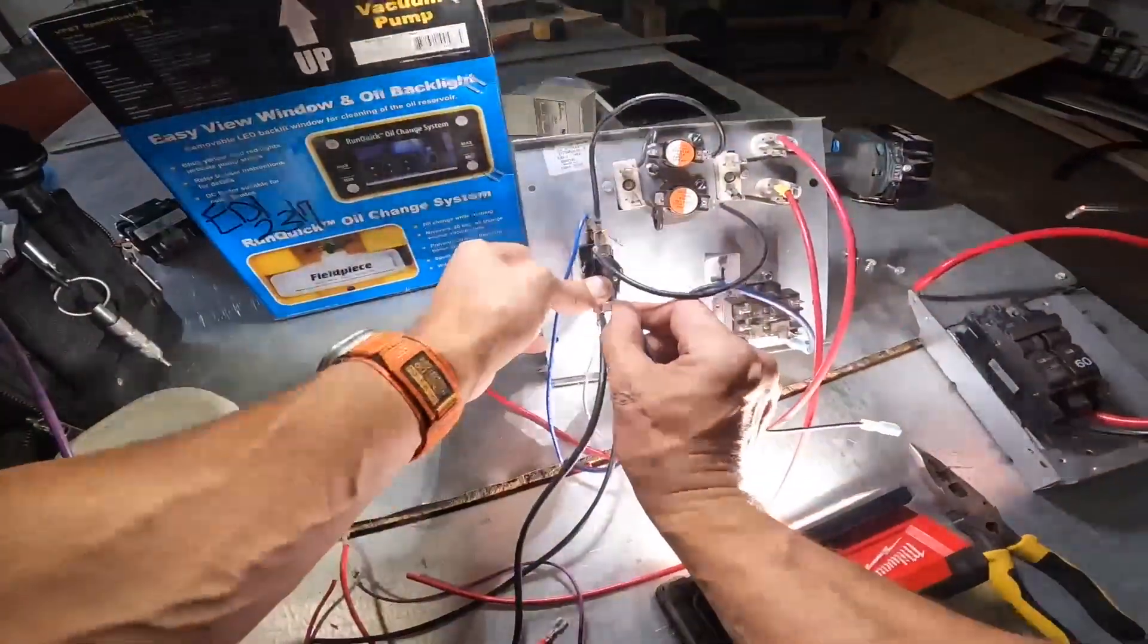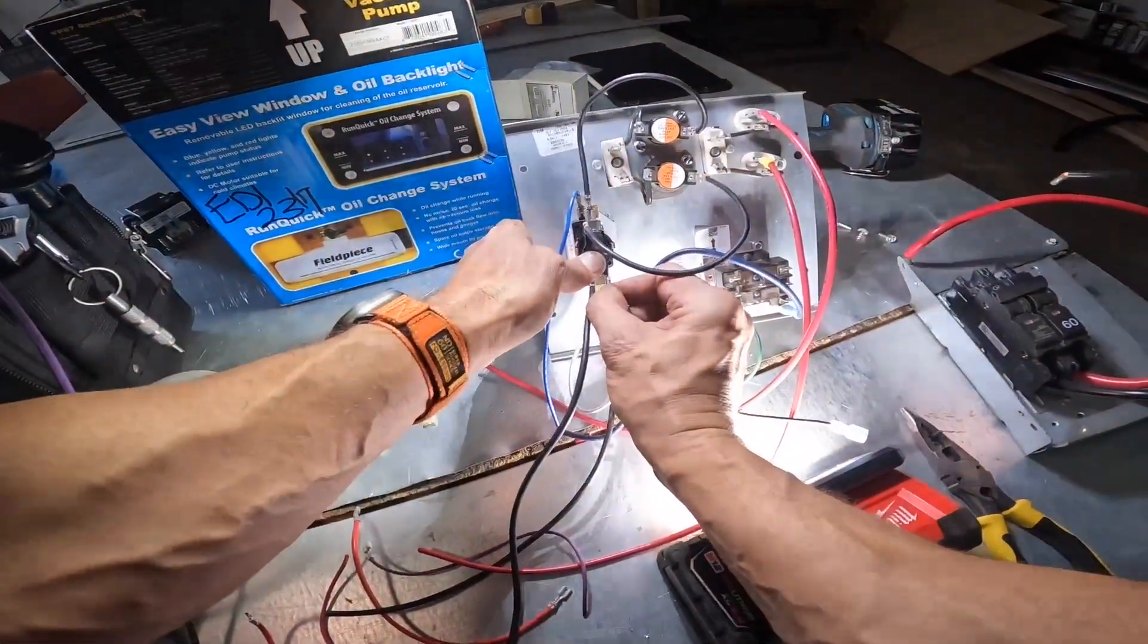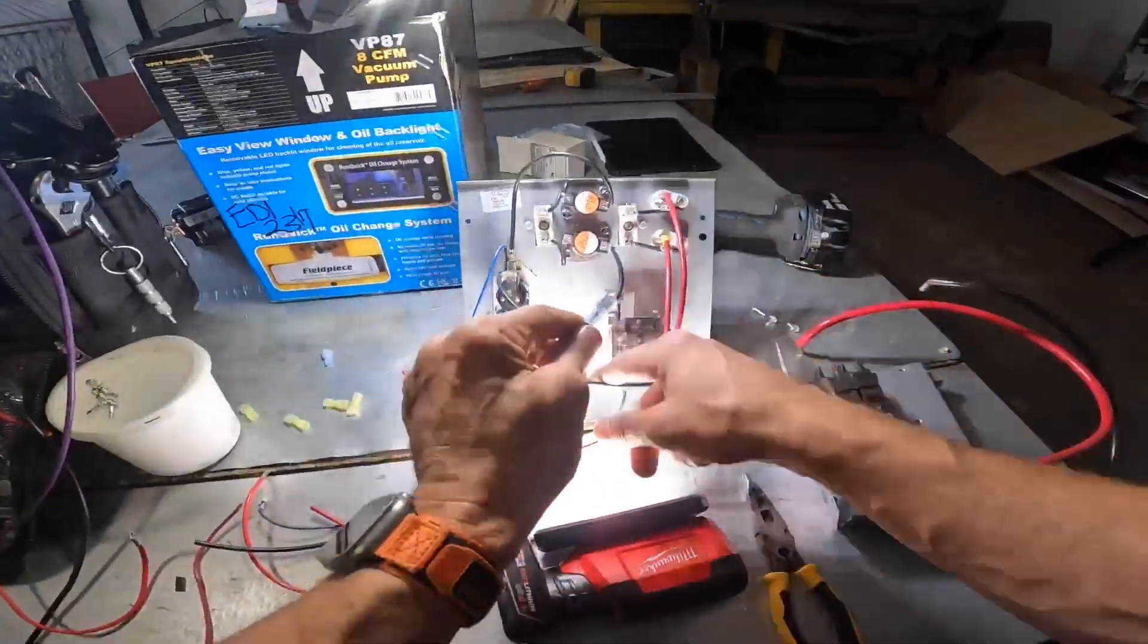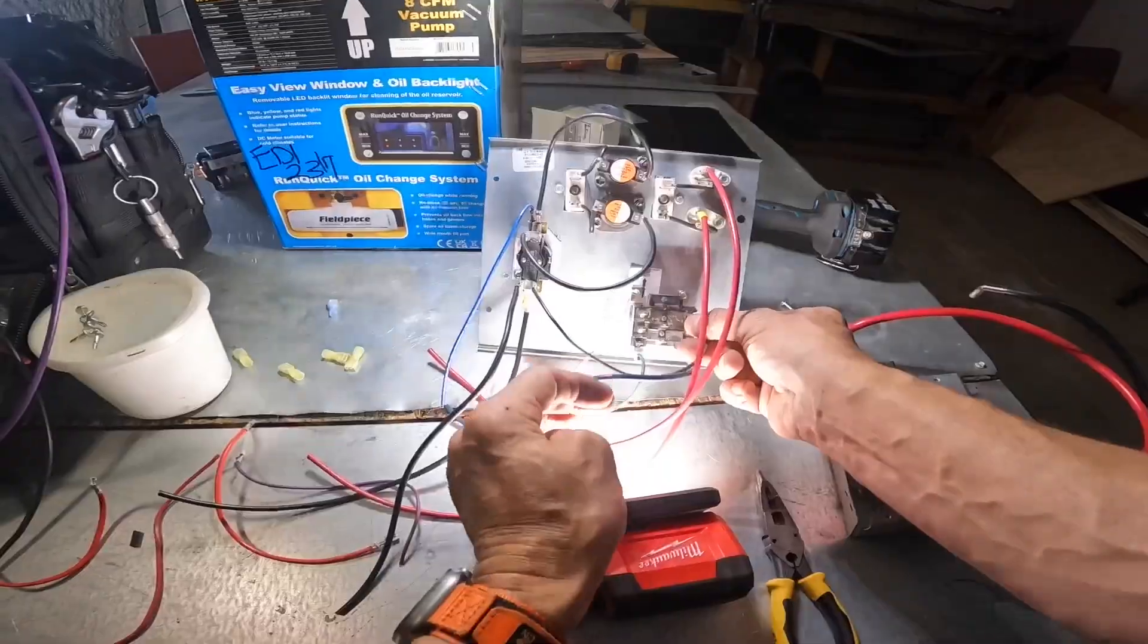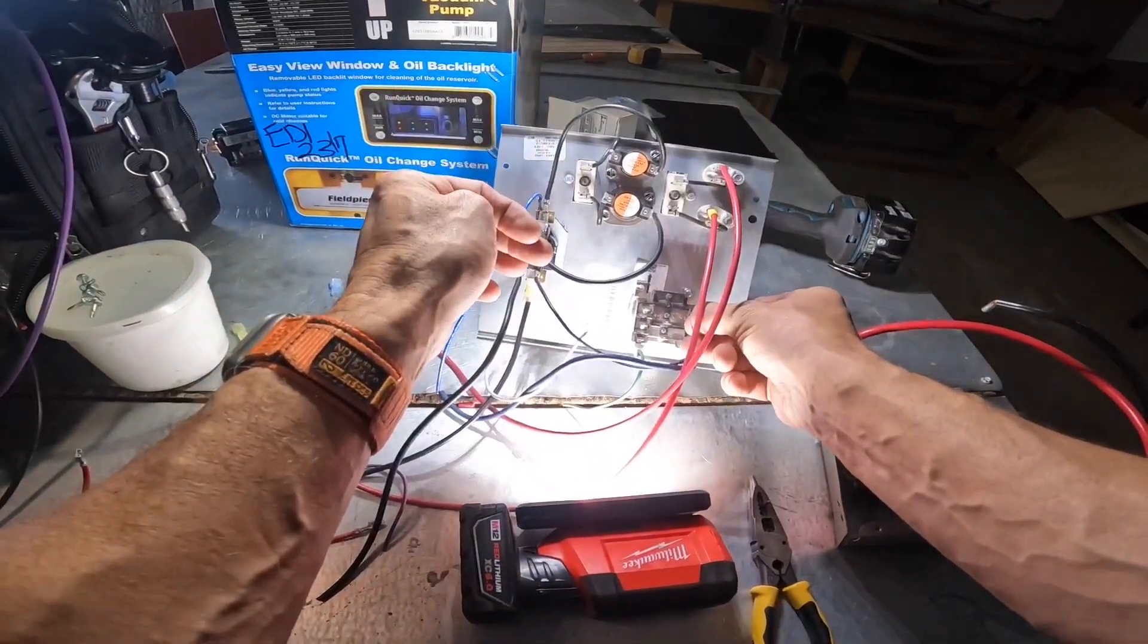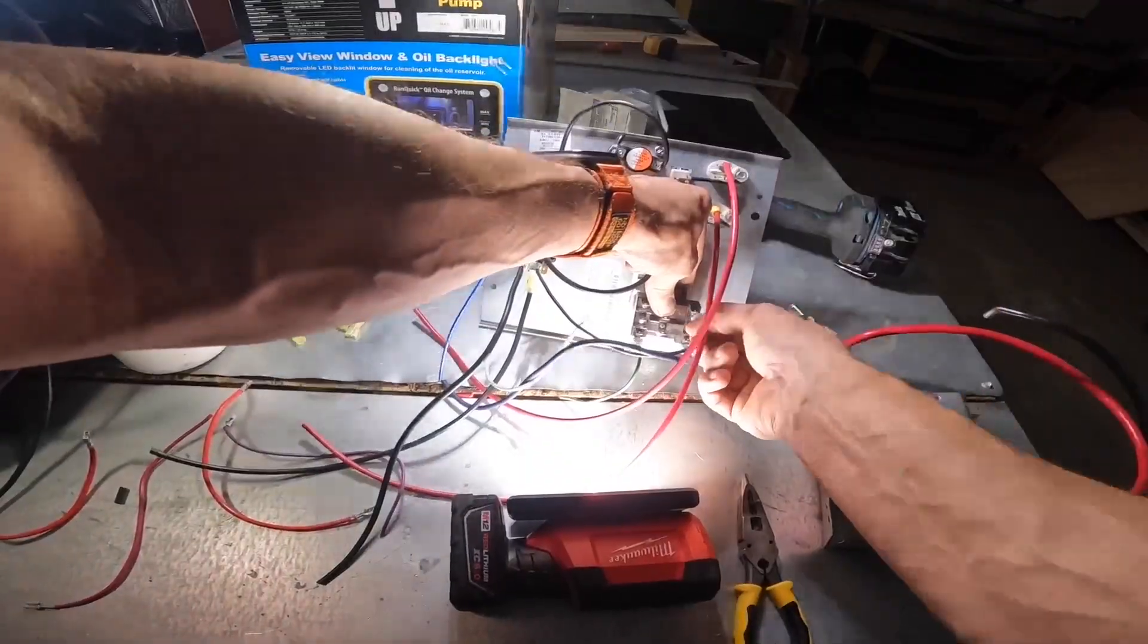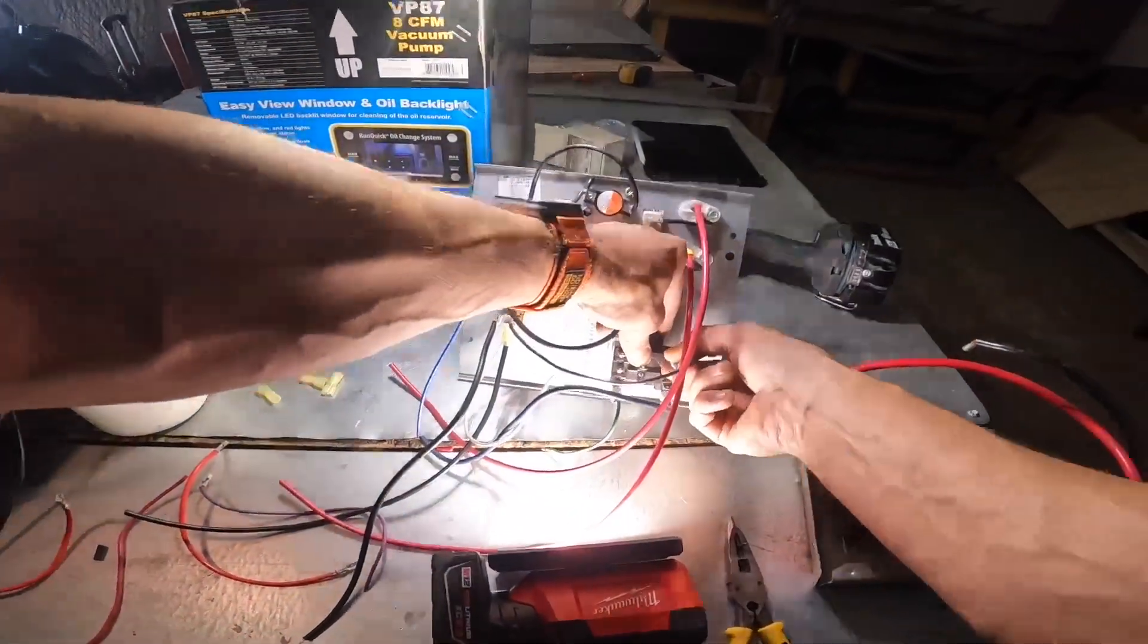So I'm going to come off the top of the sequencer where the power comes in and we're going over here to normally open. Did I say normally closed? We're going to normally open.